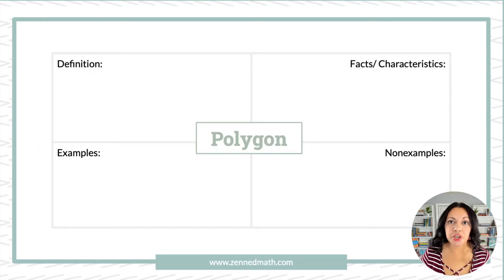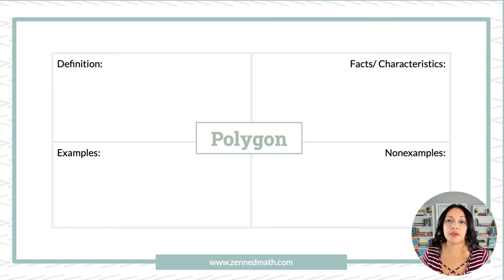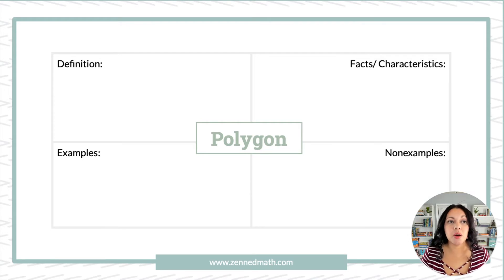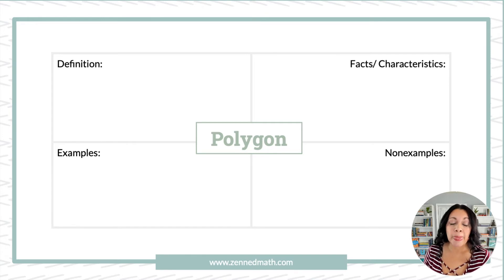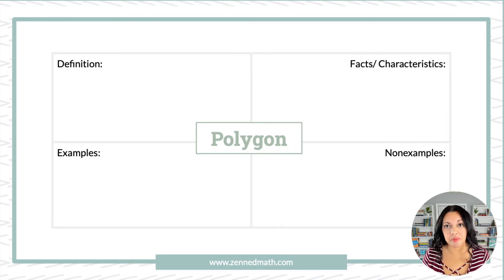I want to get into the Frayer Model, but I want to get into a couple of different ways that we can use it. I'm going to show you a couple of different Frayer Models. I want you to pause the video and actually try to fill this out so you can put yourself in the mind of the student. I'm going to give you the word polygon. What's great about the Frayer Model is it has you look at a word in different ways — a definition, some characteristics about polygons, some examples, and some non-examples.